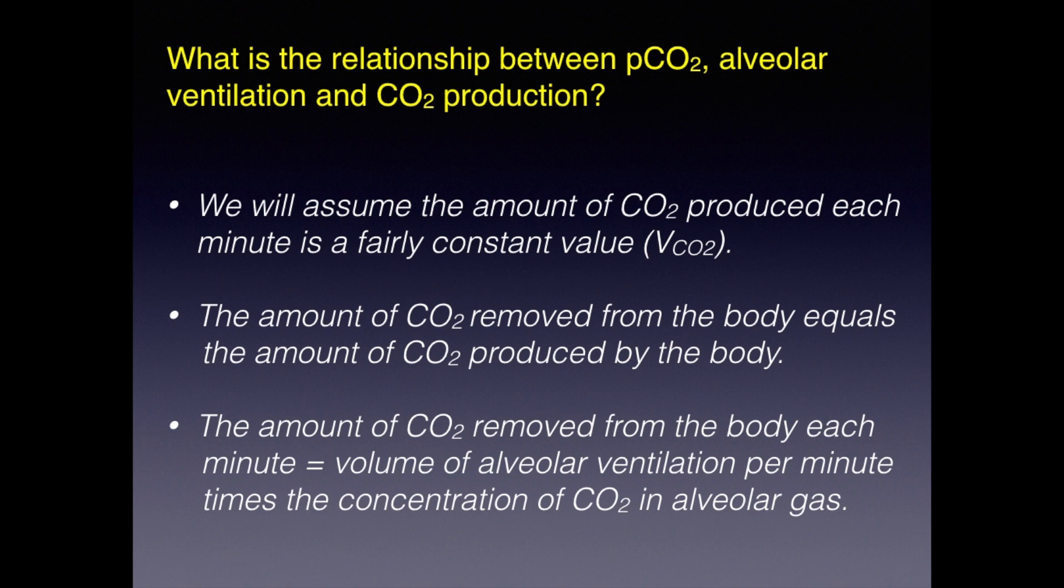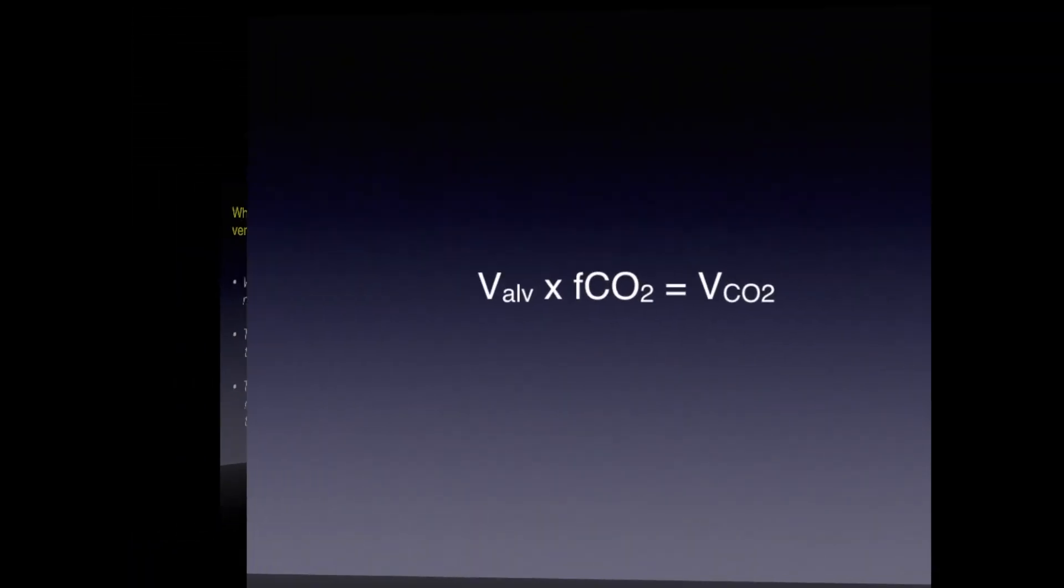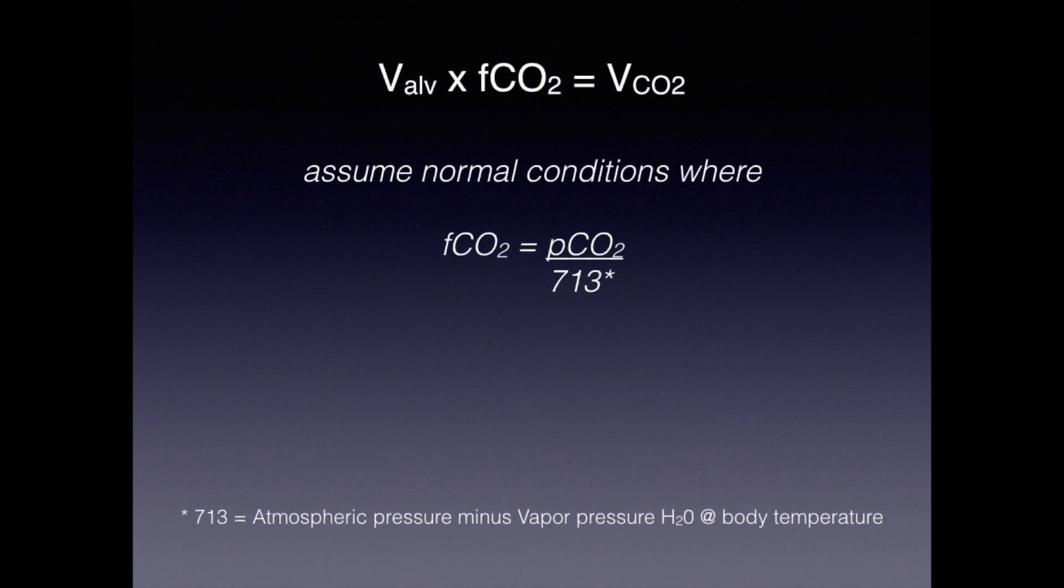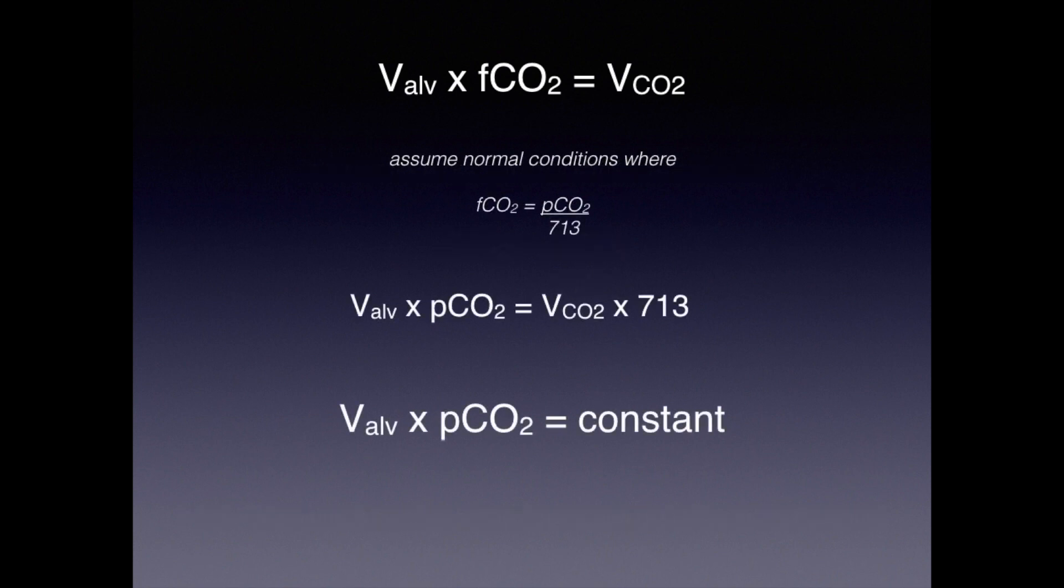First, we will assume that the amount of CO2 produced each minute is a stable and constant value. Second, the amount of CO2 removed from the body equals the amount of CO2 produced. The third concept is that the amount of CO2 removed from the body each minute equals the volume of alveolar ventilation per minute times the concentration of CO2 in alveolar gas. Putting this last point into the form of a mathematical equation, we can say that minute alveolar ventilation times a fraction of CO2 in alveolar gas equals minute CO2 production. This middle equation converts fraction CO2 to the more familiar pCO2, and this bottom equation lets us focus on the fact that pCO2 will vary inversely with minute alveolar ventilation.